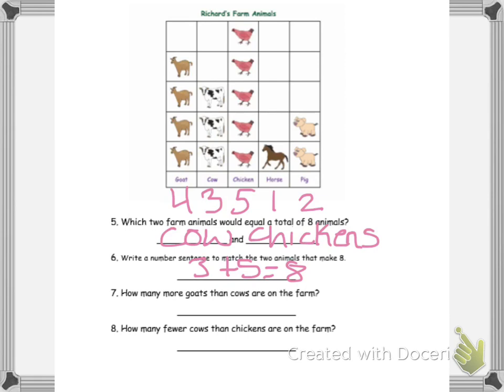How many more goats than cows are on the farm? So we know that there's four goats, three cows. So four minus three. Four minus three, four, three, two, one. We know it's one more goat.